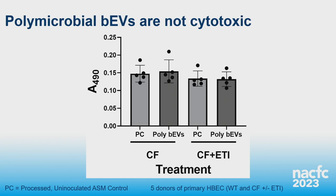As a preliminary measure of relative abundances of each bacterium in our vesicle preparation, we turned to 16S sequencing, having previously found ribosomal RNA in vesicles. When assessing relative abundance by 16S, we don't find the same distribution as in our CFU counts. This is a very preliminary measure and we're working on more accurate methods, but it does confirm that we have vesicles from each species. Before characterizing the HBEC response, we wanted to confirm the BEVs aren't cytotoxic — and they aren't.